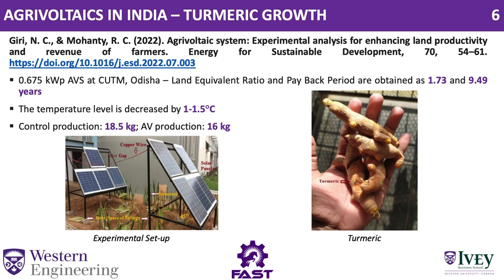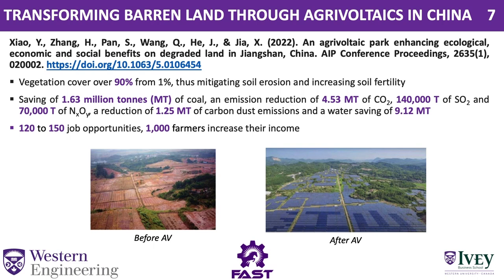There was a slight reduction in yield. The control production on normal farmland was 18.5 kg, whereas with Agrivoltaic production it was 16 kg, but the reduction was not that significant.